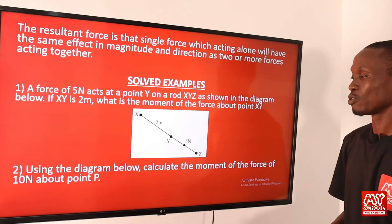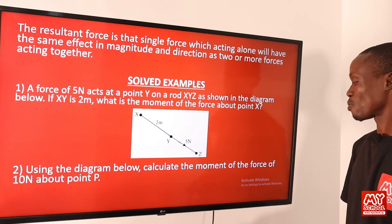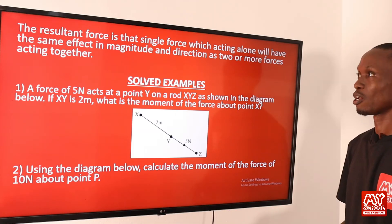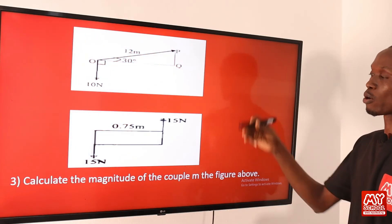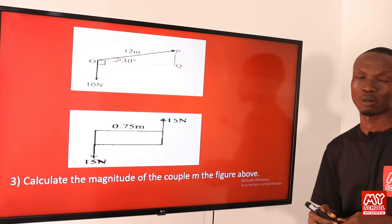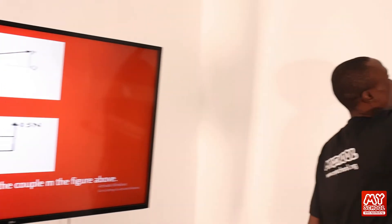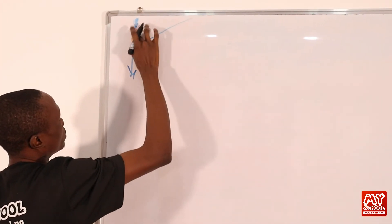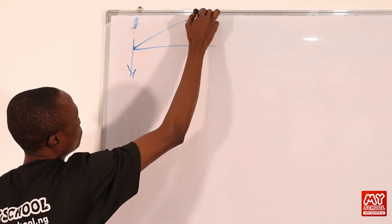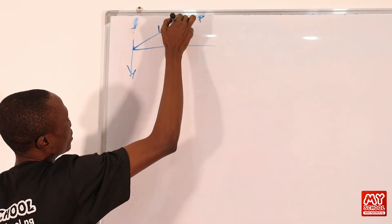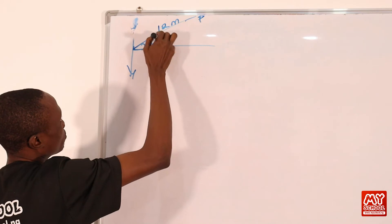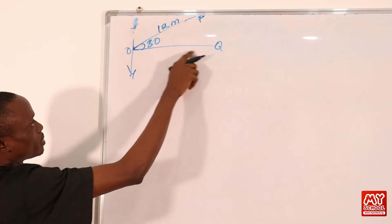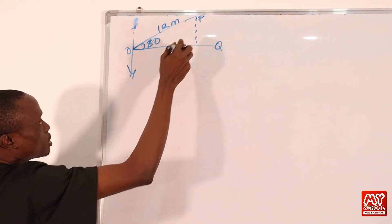Example two: Using the diagram, calculate the moment of the force of 10 newtons about point P. We sketch the diagram to solve it. Point P is given, the distance is 12 meters, the angle is 30 degrees, with points O and Q marked. We complete the triangle to make a right-angle triangle, identifying the side perpendicular to the 10-newton force.